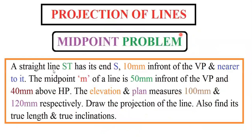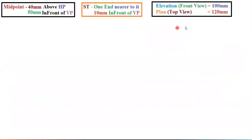A straight line SV has its end S, 10 mm in front of VP and nearer to it. The midpoint M of the line is 50 mm in front of VP and 40 mm above HP. The elevation and plan measure 100 mm and 120 mm respectively. Elevation means front view, plan means top view. These are the given data.